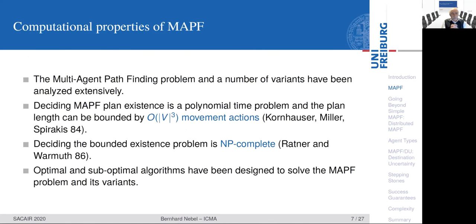That is a well-studied problem, and this particular problem in a number of variants has been analyzed extensively. Already in 1984, Kornhauser, Miller, and Spirakis came up with a solution that guarantees we will have only cubically many movement actions. A little bit later there was also a proof that if we want to find optimal plans — shortest plans — then this is an NP-complete problem. By now we have a number of different optimal and suboptimal algorithms that have been designed to solve MAPF and a number of variants.